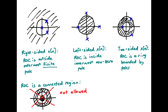A final reminder: the region of convergence is a connected region. We can't have a situation where there is one ring here and then a separate inner ring — that's not allowed. If we have a single expression for the Z-transform, we must have a connected region of convergence. That's a brief review of the properties of the region of convergence, which will be useful for both taking Z-transforms and taking inverse Z-transforms.